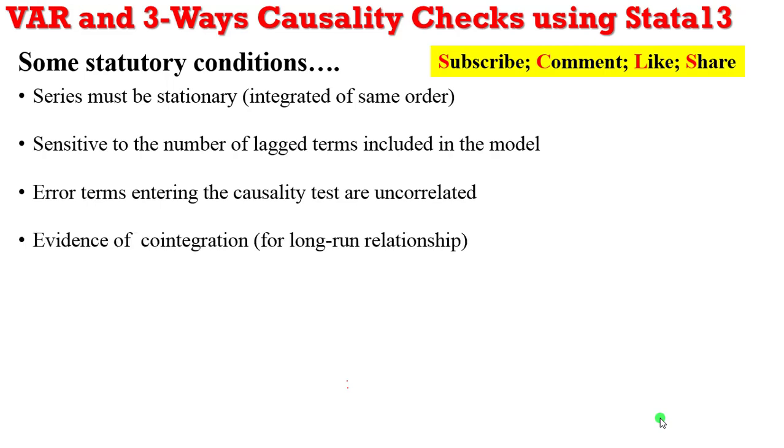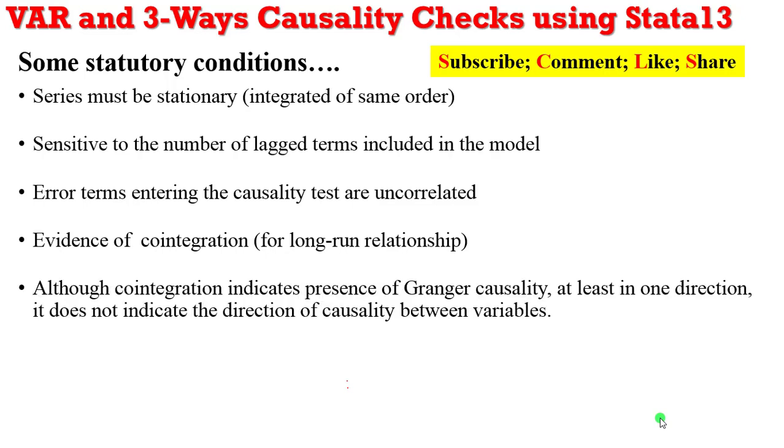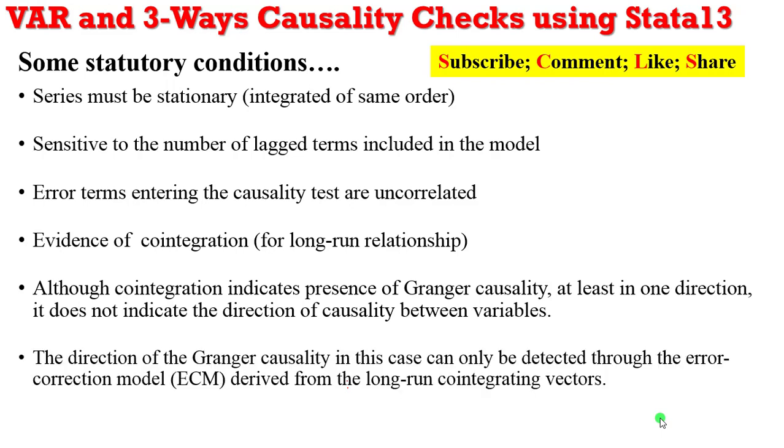If you are going to run a VECM, that is a vector error correction model, there must be evidence of cointegration either between or among the variables. Although cointegration indicates presence of Granger causality in at least one direction, it does not indicate the direction of causality between the variables. For you to know the direction of causality, it can be detected through the error correction model derived from the long-run cointegrating vectors.